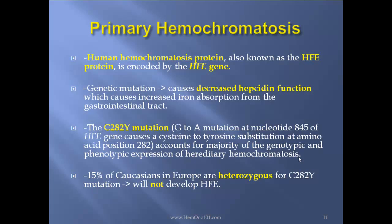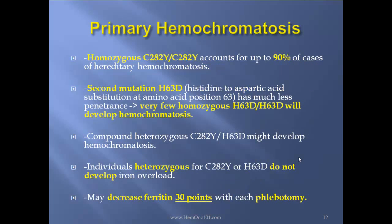15% of Caucasians in Europe are heterozygous for the C282Y mutation; they will not develop HFE hemochromatosis, however. Homozygous C282Y accounts for up to 90% of cases of hereditary hemochromatosis. The second mutation, H63D — a histidine to aspartic acid substitution at amino acid position 63 — has much less penetrance. Very few homozygous H63D individuals will develop hemochromatosis. Compound heterozygous C282Y and H63D might develop hemochromatosis, but individuals heterozygous for C282Y or H63D alone do not develop iron overload state.